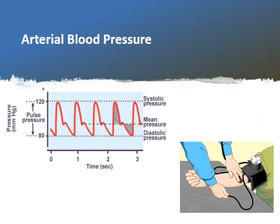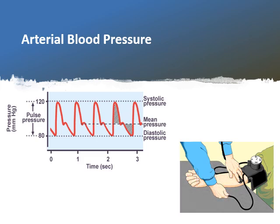Starting with — what do we mean by arterial blood pressure? Arterial blood pressure is the pressure exerted on the arterial wall during the cardiac cycle. As we all know, the cardiac cycle is formed of systole followed by diastole. So we have a systolic blood pressure and a diastolic blood pressure.